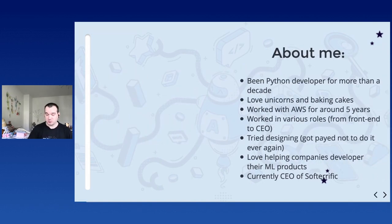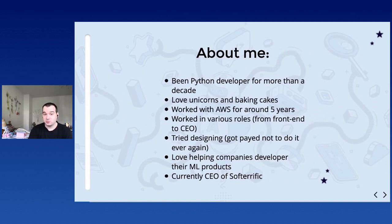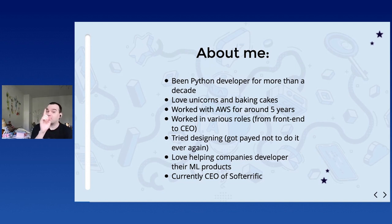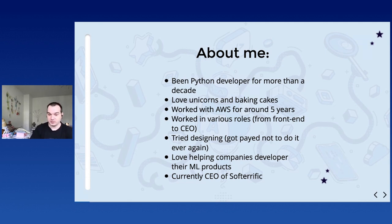About me - I've been doing Python development for almost a decade. I'm a very good person and since I love unicorns and baking cakes I work with AWS. I tried Java development and even PHP - did not like it - but I tried Python one day and ever since I've only been doing Python, which makes me super happy. And somehow I also ended up as the CEO of my company - not sure how that happened but I'll keep you in the loop.